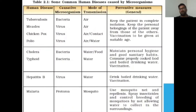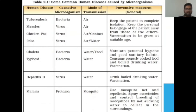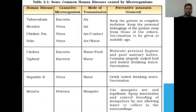Some common diseases caused by microorganisms: Tuberculosis (TB) is caused by bacteria and transmitted through air. Measles is caused by a virus and also transmitted through air. Chicken pox is caused by a virus and transmitted through air or through contact with an infected person.